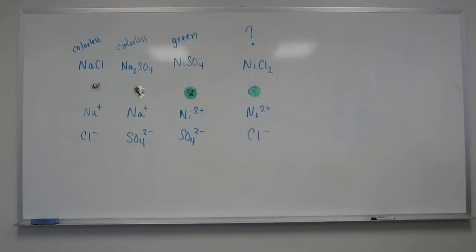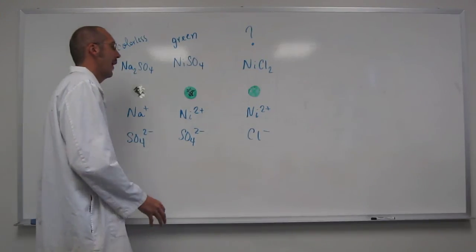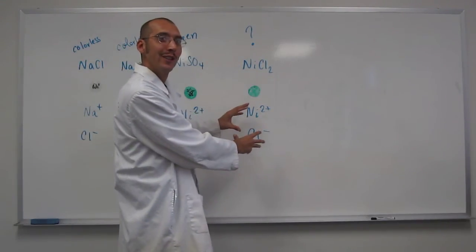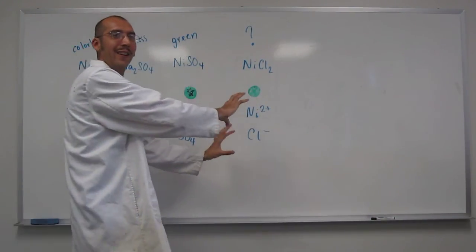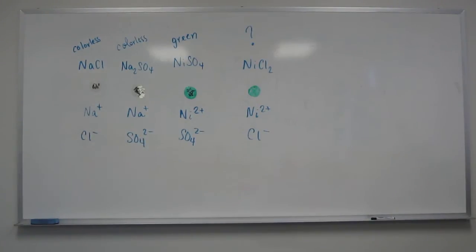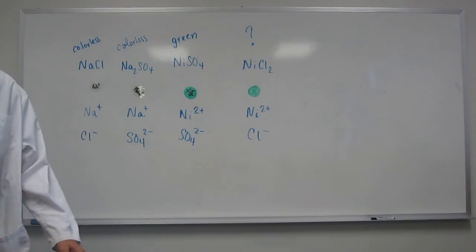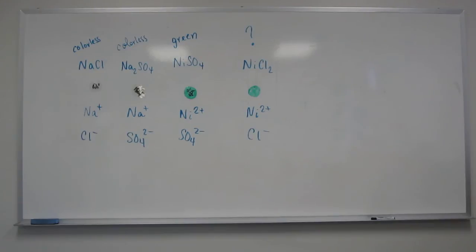So does that help you out? You could do these kinds of things — maybe if you had yellow and blue, that would make green. If you have two ions and one has color and one is colorless, the one with color will always dominate — that's the one you're going to see, because the other one doesn't absorb light. Ionic compounds that absorb light usually have a transition metal in them, and it's the transition metal that's usually the light-absorbing thing.